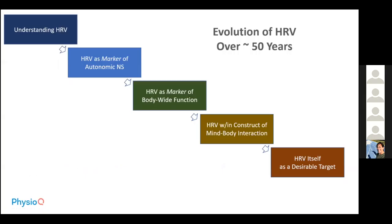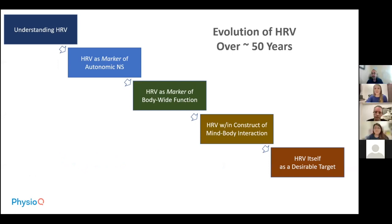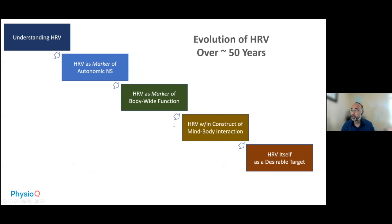As mentioned in my first talk, this is the way I interpret how heart rate variability has evolved through the past 50 years, and it's divided into five stages: understanding heart rate variability; heart rate variability as a marker of autonomic nervous system; heart rate variability as a marker of body-wide function; heart rate variability within the construct of mind-body interaction; and heart rate variability itself as a desirable target.